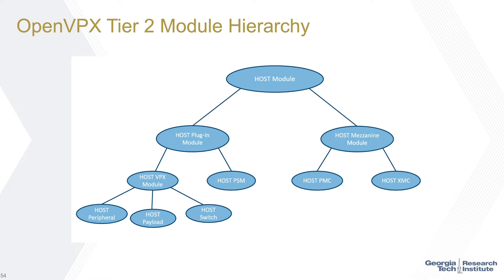The HOST OpenVPX Tier 2 defines a set of requirements on these different modules with a module hierarchy. This allows very high-level requirements to apply to all HOST modules while also having separate requirements for individual module types. For instance, a requirement saying 'a HOST VPX module shall do X' applies to HOST peripherals, payloads, and switches but not to mezzanine or power supply modules. A requirement for all HOST modules — such as chassis management support — would apply to every module type.